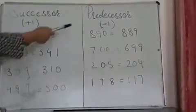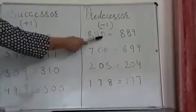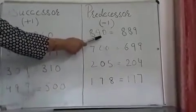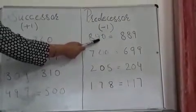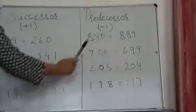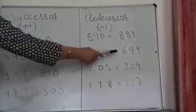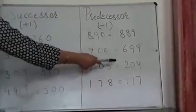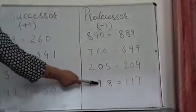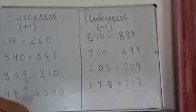The same way in the predecessor we will minus one. When we subtract one from the one's place, the number will change automatically. Here, eight hundred ninety minus one, it will come eight hundred eighty nine. Seven hundred minus one, six hundred ninety nine. Two hundred five minus one, two hundred four. One hundred seventy eight minus one, one hundred seventy seven.